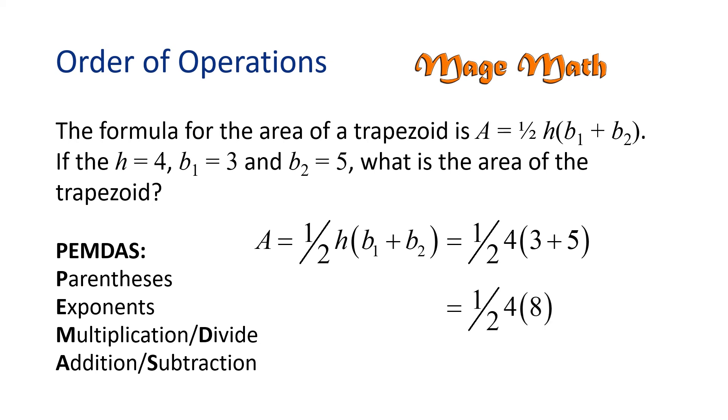Now, we need to multiply 1 half times 4 times 8. Well, 1 half times 4 is 2, and 2 times 8 is 16. So, the area of the trapezoid is 16 square units.